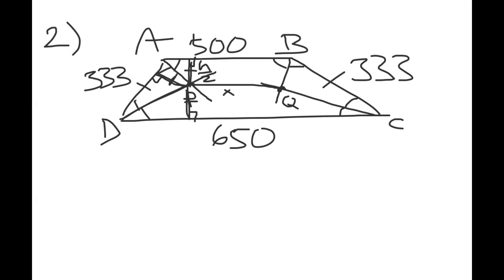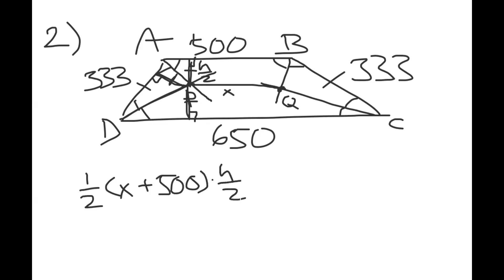By symmetry, PQ should be parallel to the two bases. The area of trapezoid ABQP is (1/2)(x + 500)(h/2). The area of trapezoid PQCD is (1/2)(x + 650)(h/2). The area of each triangle APD and BQC is (1/2)(333)(h/2). We multiply the triangle area by 2 since APD and BQC are equal.